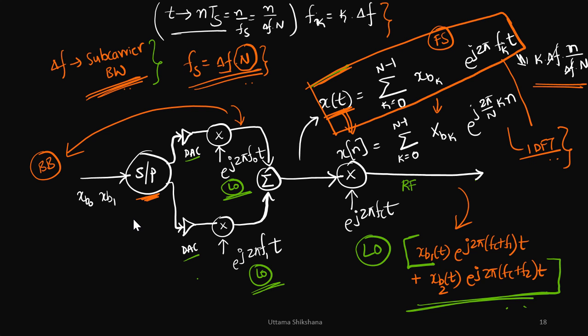Let's say n is the number of subbands and delta f is the subband size or you can say subcarrier bandwidth. If I choose the sampling frequency as this and if I choose the subbands of this form.